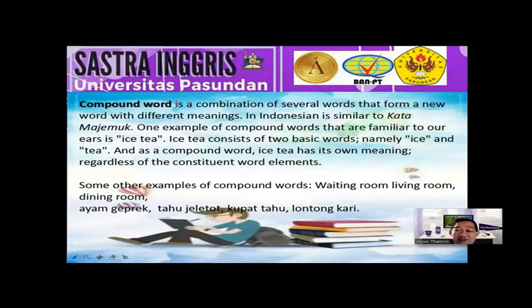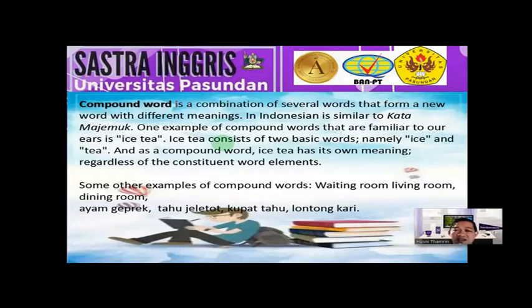In Indonesian, it is called 'kata majemuk.' A compound word can consist of, for example, noun and noun — two nouns. Lexically, word by word they have different meanings, but when combined they will have one specific meaning. So there is a different meaning from the vocabulary understood one by one; the combination of those words has one different meaning.